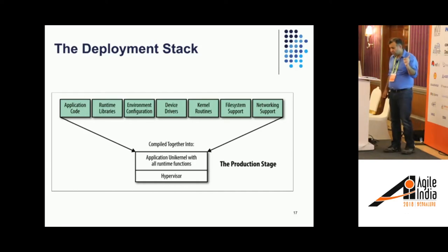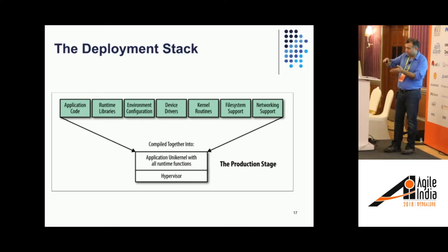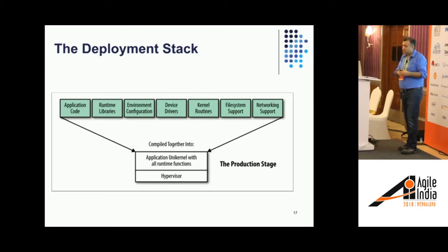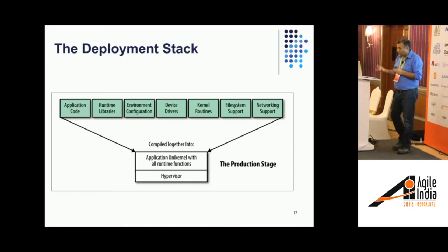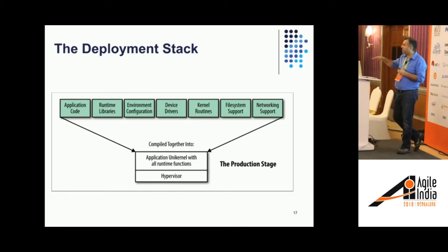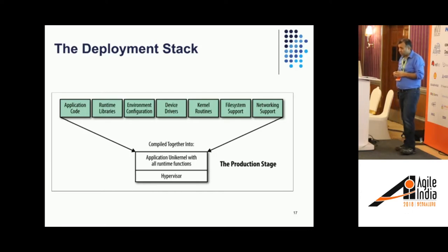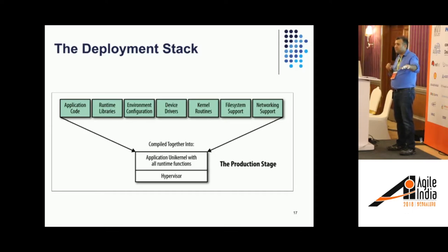One thing to caution about unikernels: because there is no difference between an operating system and an application, if you allocate 4 GB of RAM to an image, your system will show that you're consuming all 4 GB even if you don't actually use it. In Docker you have the ability to move memory from one container to another — you don't have that facility in unikernels, because a unikernel does not differentiate between what is an OS and what is an application. As a result, you tend to overestimate the memory you need and provision accordingly to avoid crashes.